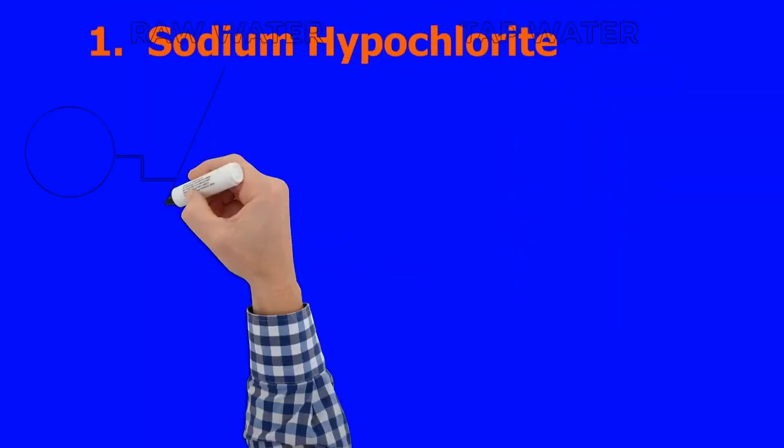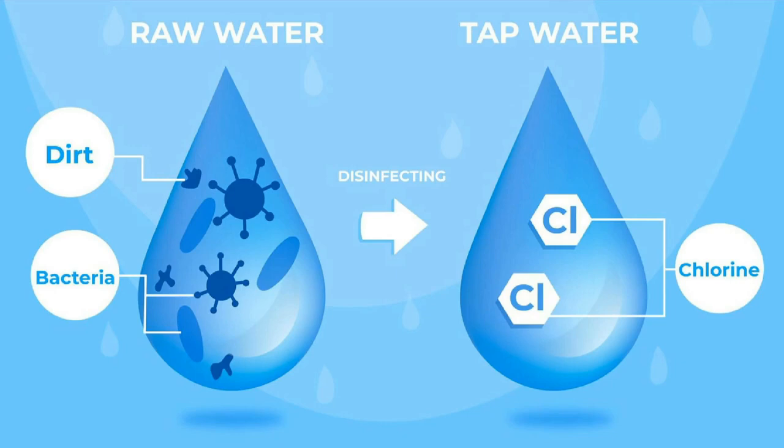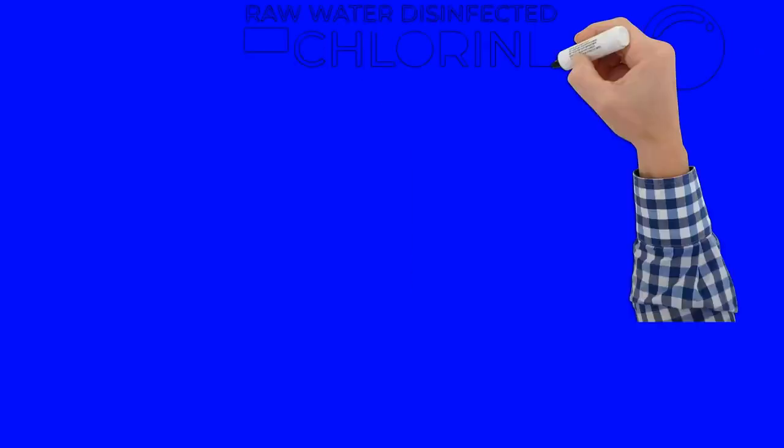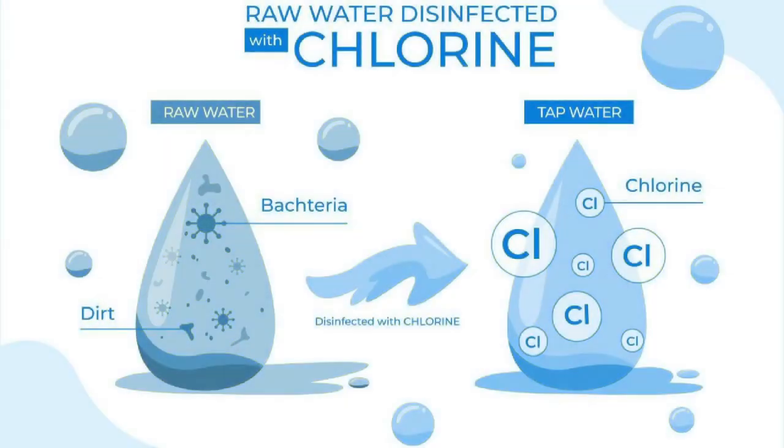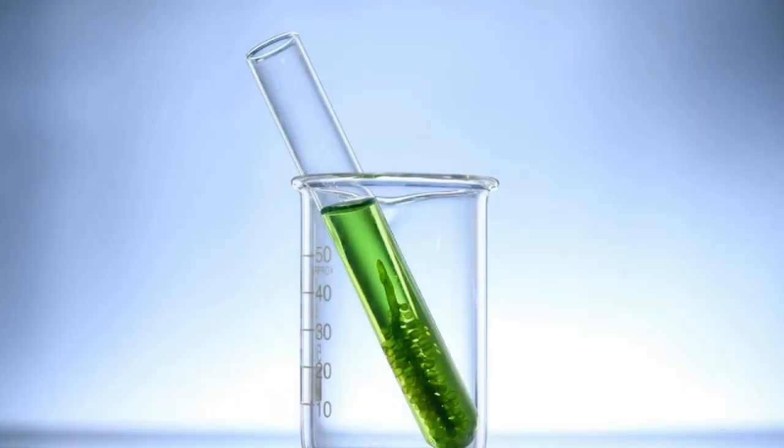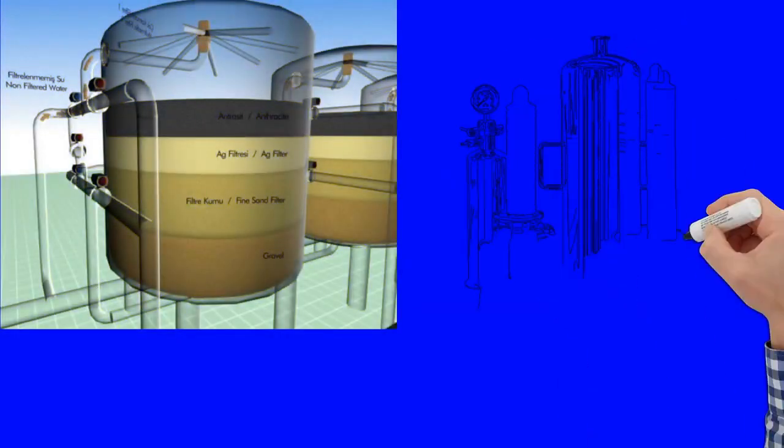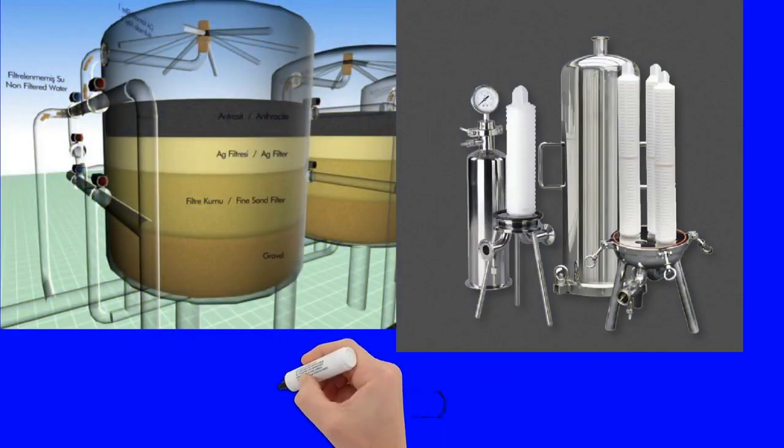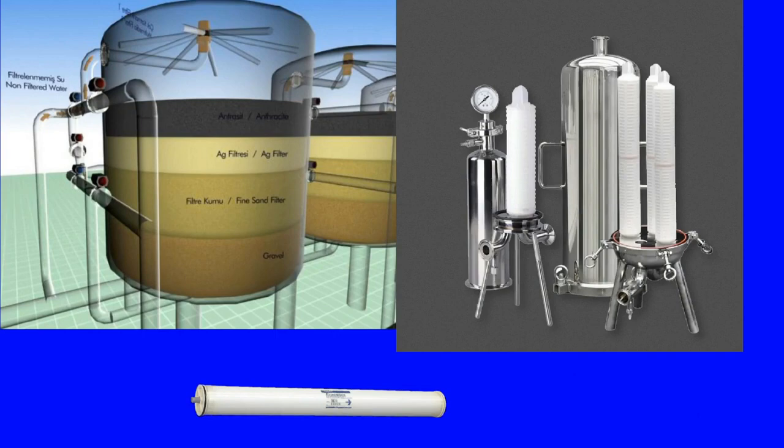Sodium hypochlorite is used for disinfection or chlorination of water. It can be used in two places: first in the raw water and second in the product water. The purpose of using sodium hypochlorite in the raw water is to avoid biological scaling in the multimedia filter, cartridge filter, and RO membranes.